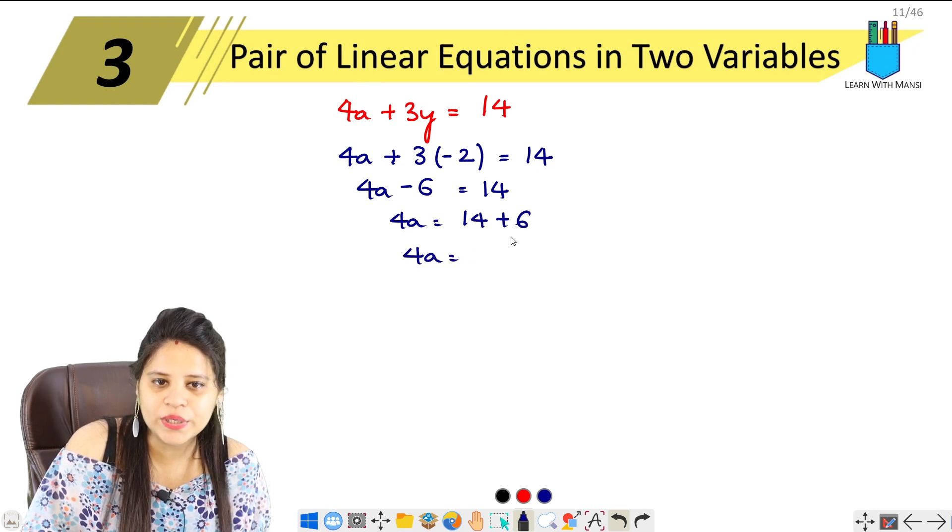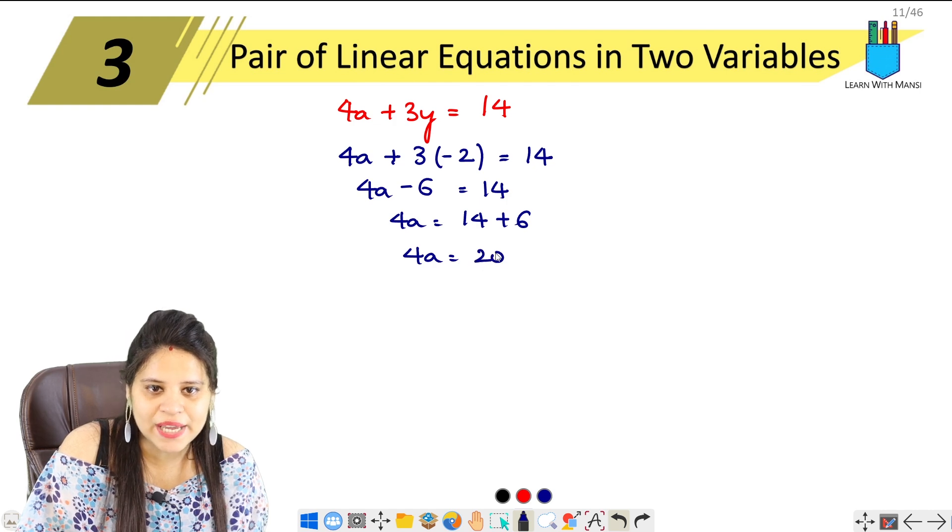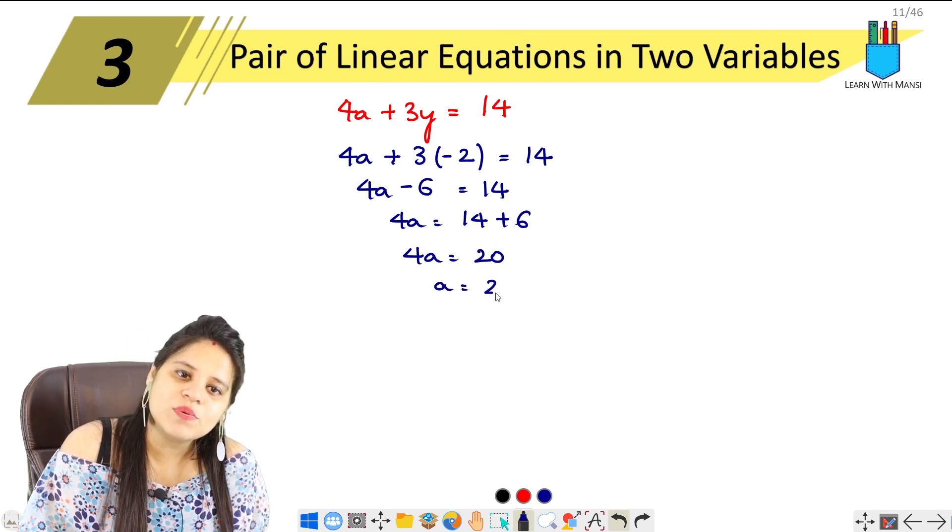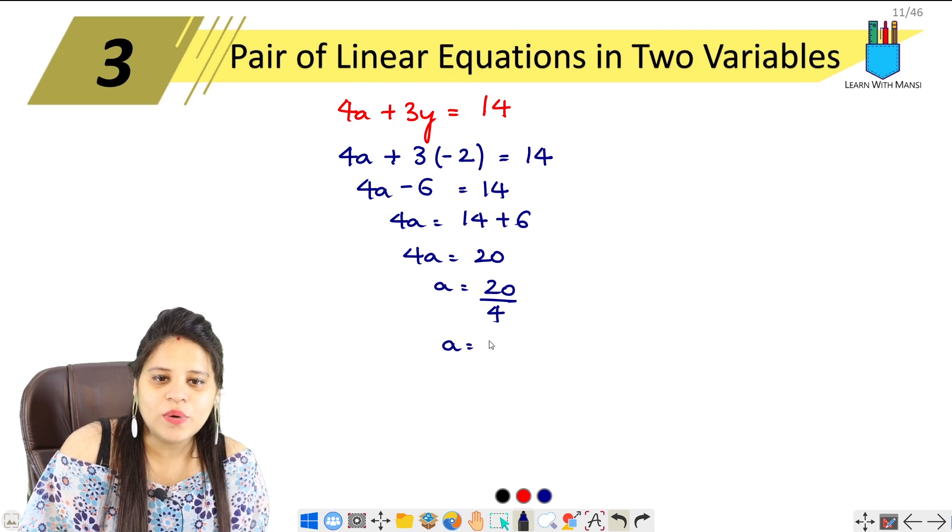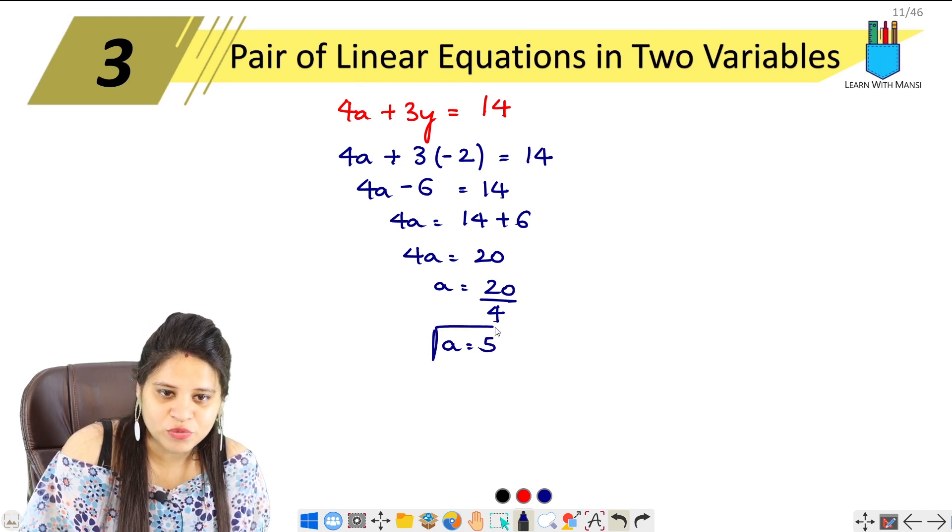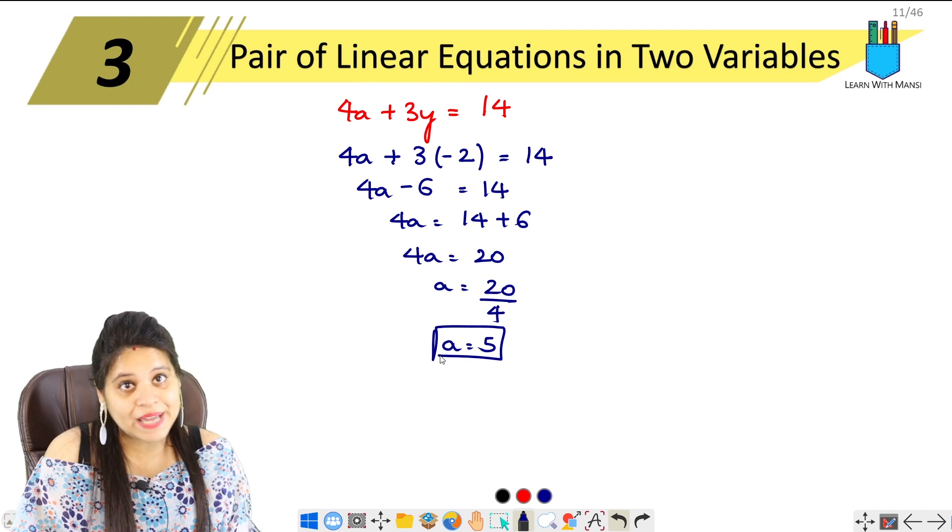So this becomes 4a, then 6, 14 plus 6 will be 20. A equals to 20 upon 4. A's value has come. 20 upon 4 means 5 upon... sorry, 20 upon 5. So a has come 5 upon... again, with this a's help we need to find.